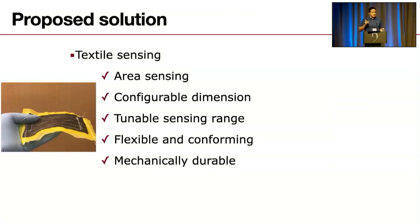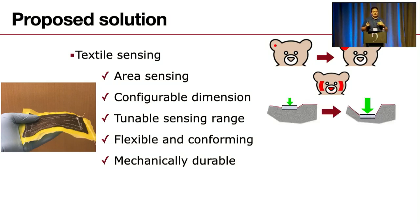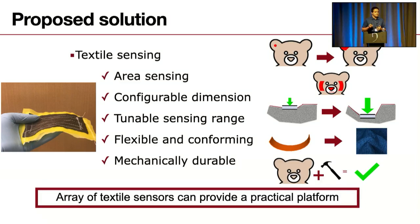What we propose is using fabric-based sensing. The reason behind that is we can sense an area using a single sensor, we can change the dimension of the sensor to conform to the area that's supposed to sense, we can tune the sensing so that it can pick up small and very strong pressure sensing as well. The sensors are going to be flexible and conforming so they can maintain the feel and look of the toy, and they are mechanically more durable than rigid electronics. As a result, this array of these textile sensors can turn and enable sensing for any fabric-based objects.